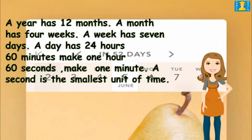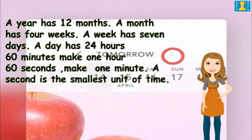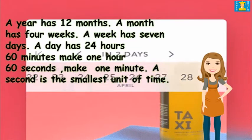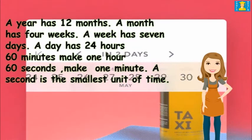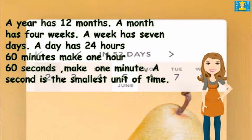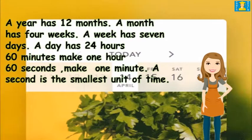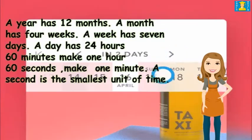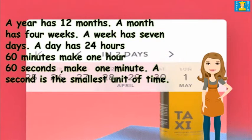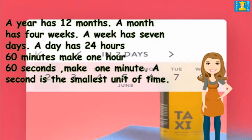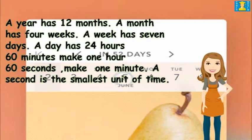A year has 12 months. A month has 4 weeks. A week has 7 days. A day has 24 hours. 60 minutes make 1 hour. 60 seconds make 1 minute. A second is the smallest unit of time.